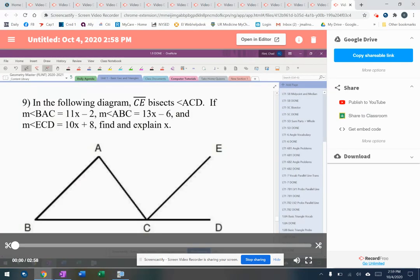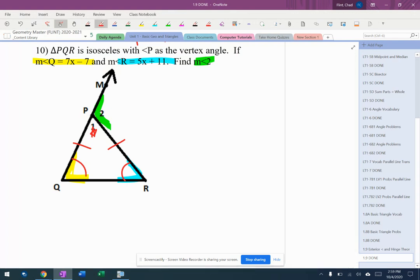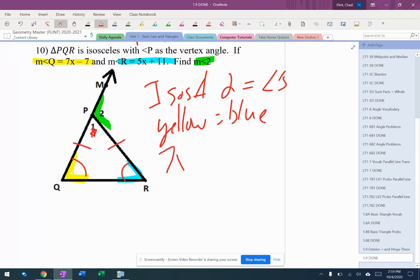So I'm going to write down isosceles triangle 2 equal angles, and that's going to tell me yellow equals blue, which is going to tell me 7x minus 7 equals 5x plus 11. So I'll solve that.